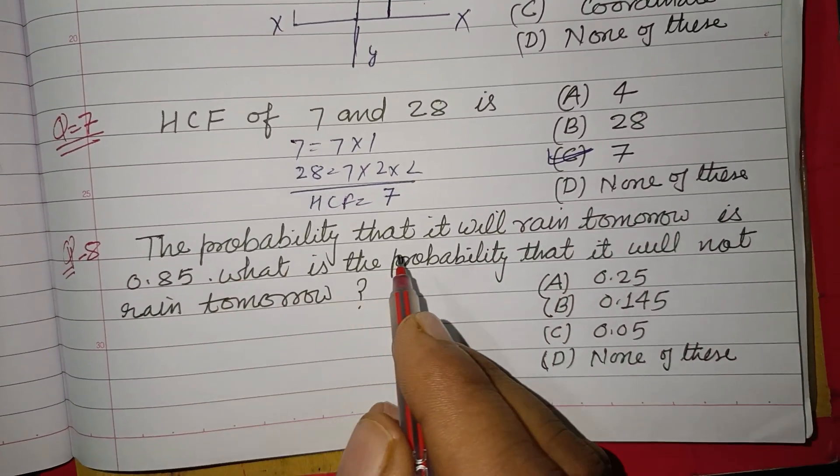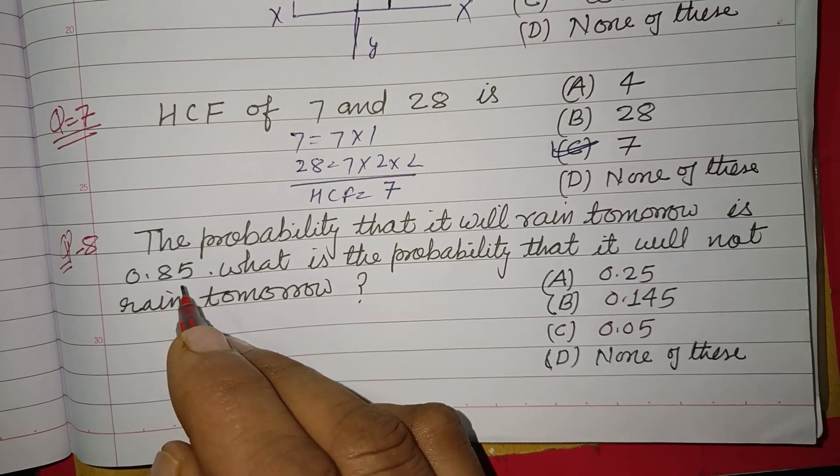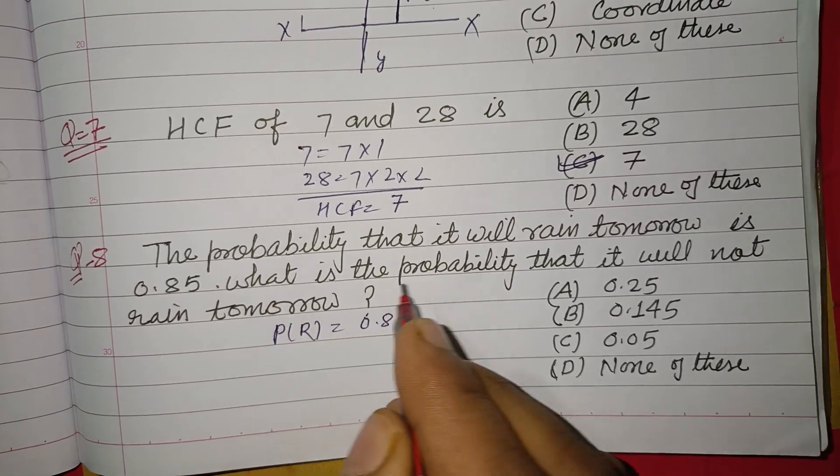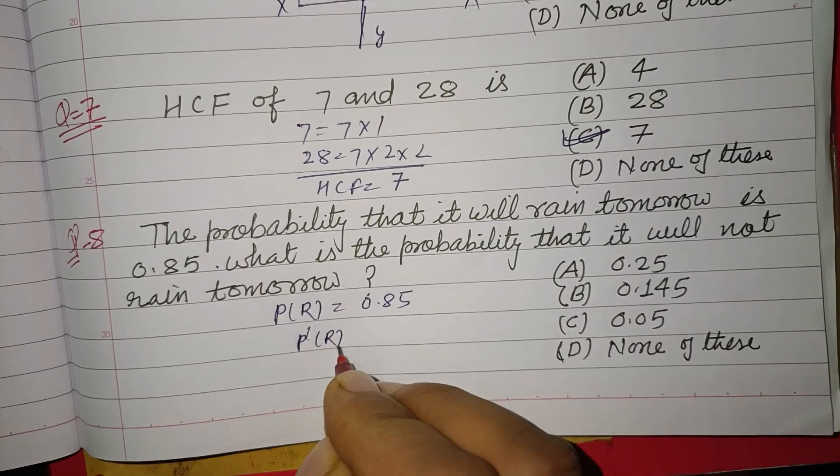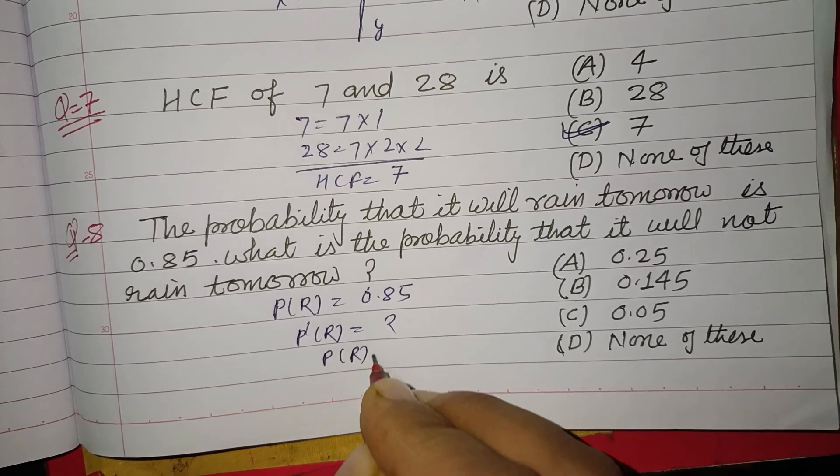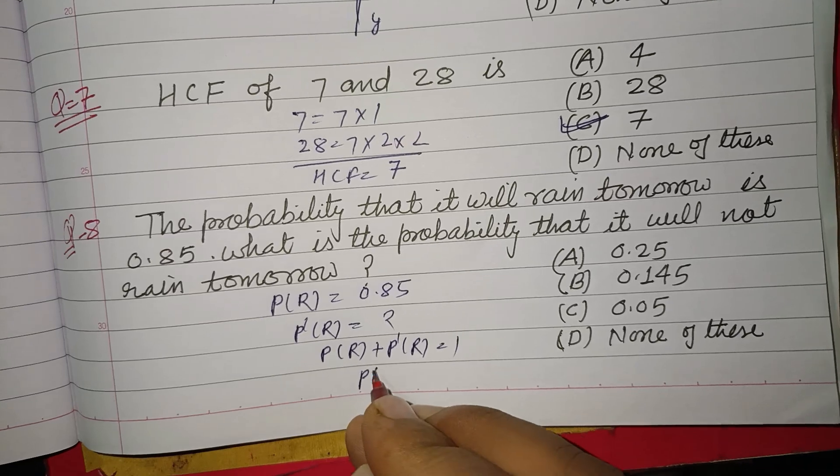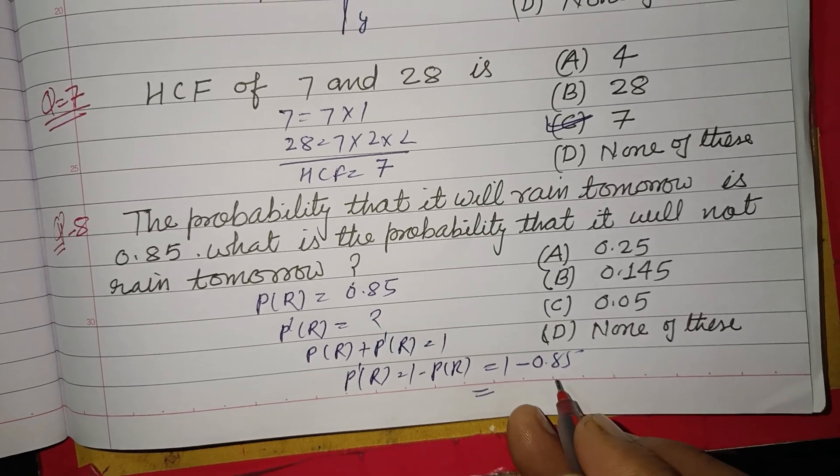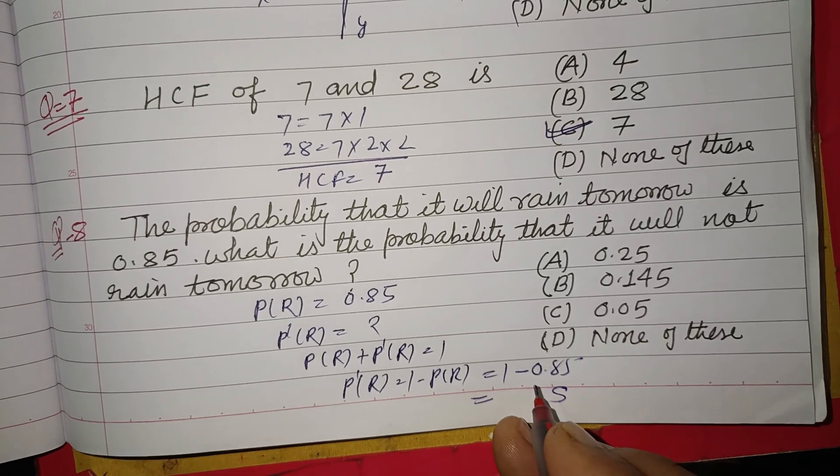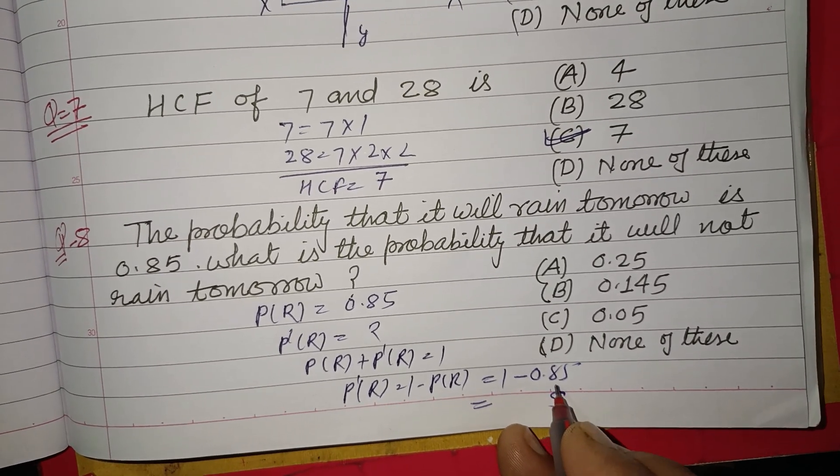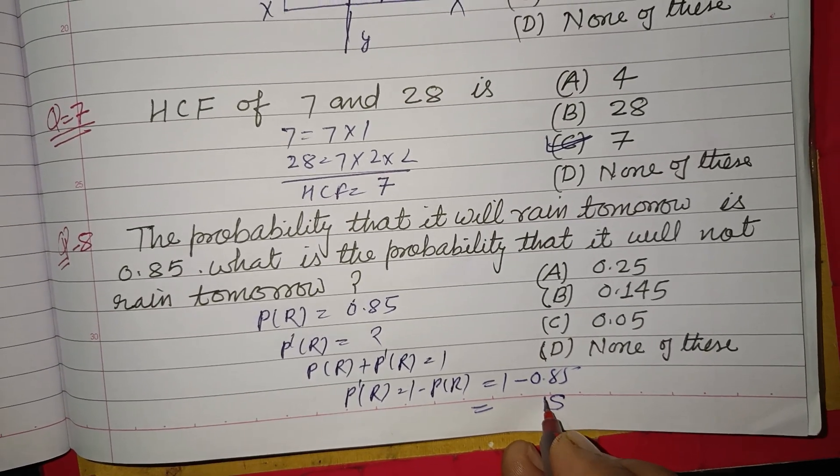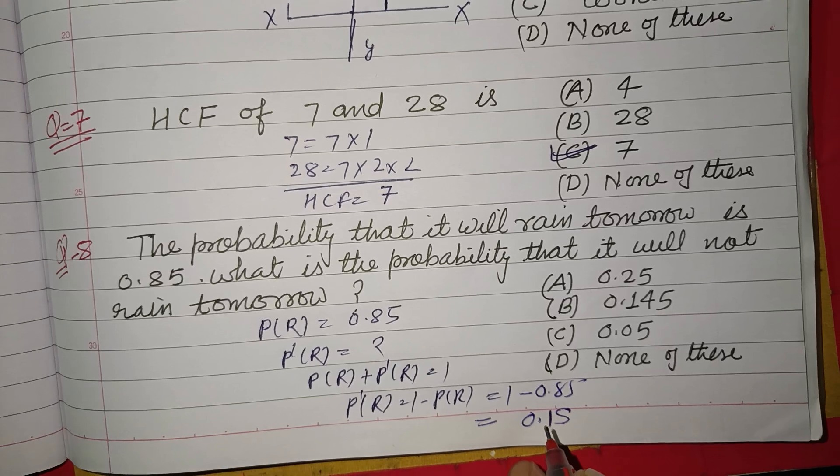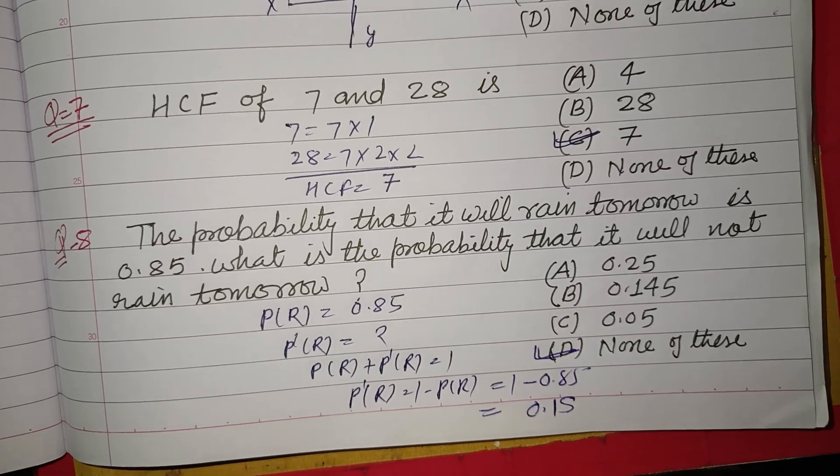The probability that it will rain tomorrow is 0.85. What is the probability that it will not rain tomorrow? So P dash R is required. You know that P R plus P dash R equal to 1. Therefore P dash R equal to 1 minus P R, so 1 minus 0.85, so this is 0.15. So none of the answer is correct, so D is the correct answer for this question.